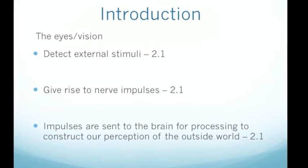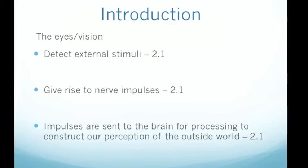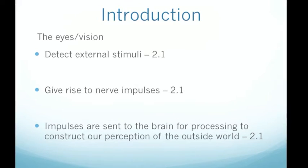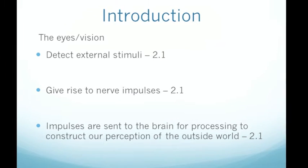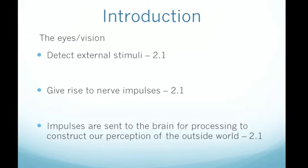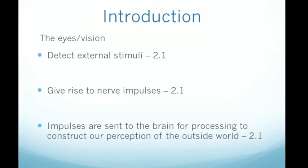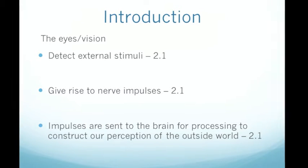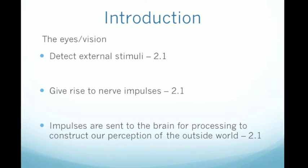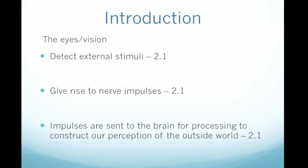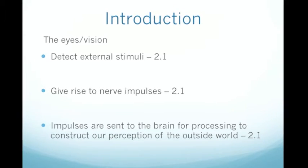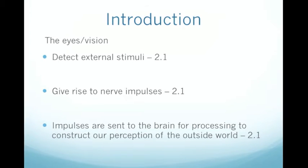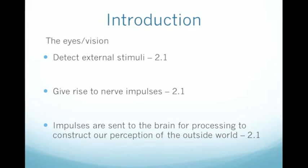So to the introduction. We firstly need to look at what the eyes do, what their role is within the body. We can see that they detect external stimuli and give rise to nerve impulses. The impulses are then sent to the brain for processing, and they construct our perception of the outside world. The following video will show the path from external stimuli to the brain.